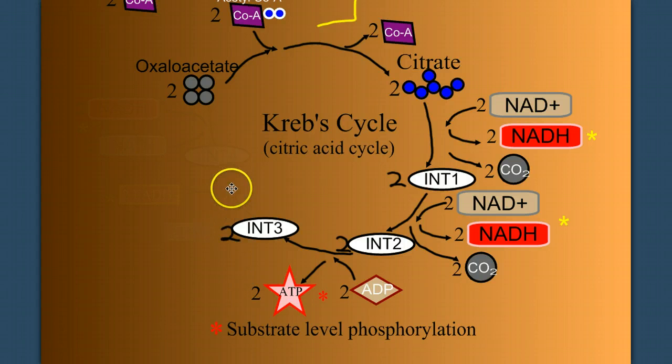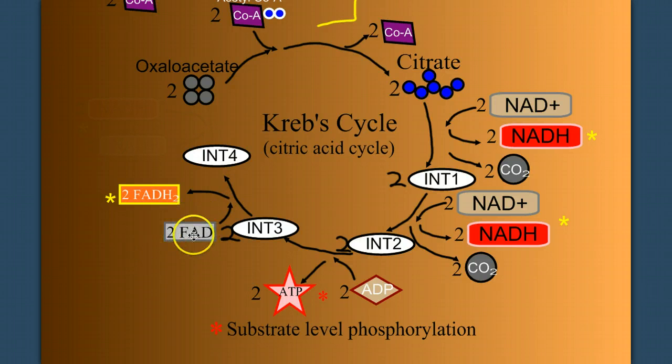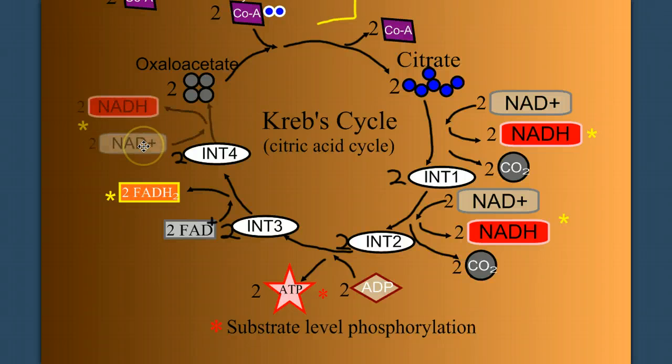We have two more reactions to go. We go to one more intermediate, and this time we reduce a molecule called FAD+. Now, FAD is a lot like NAD in that it's an electron carrier. It's going to pick up hydrogen and high-energy electrons. And finally, we need to convert back to oxaloacetate, and doing that, we once again reduce two NAD+ to two NADH.